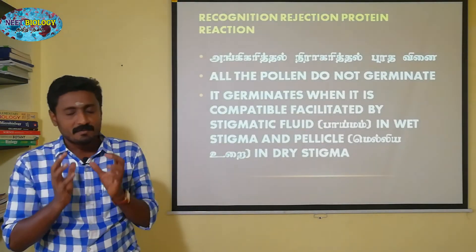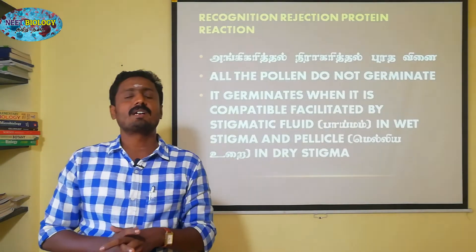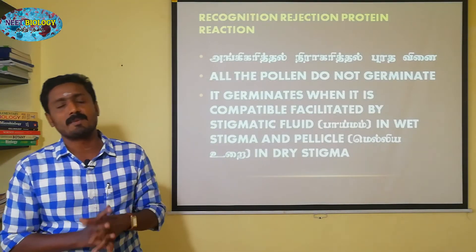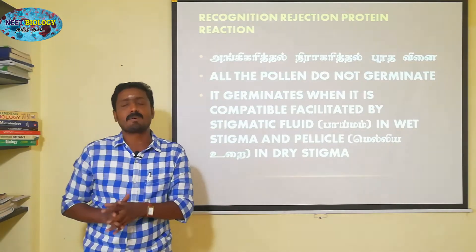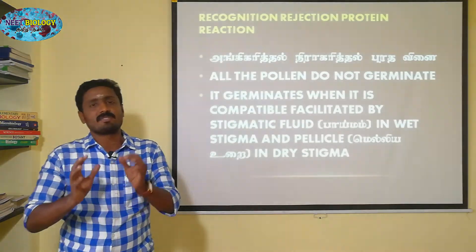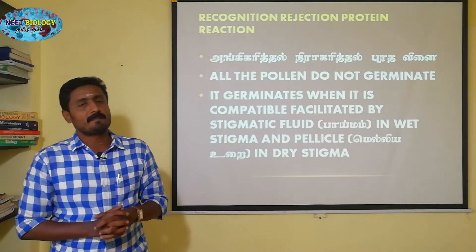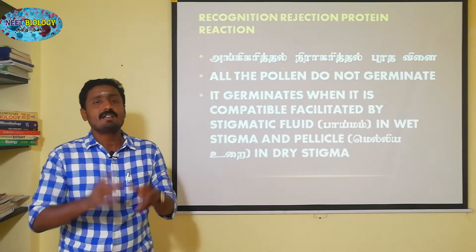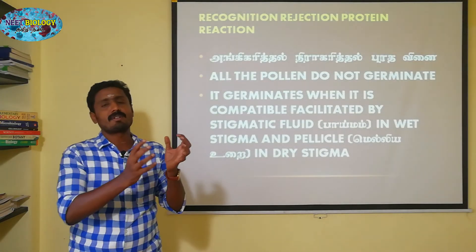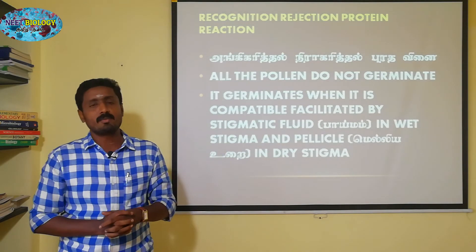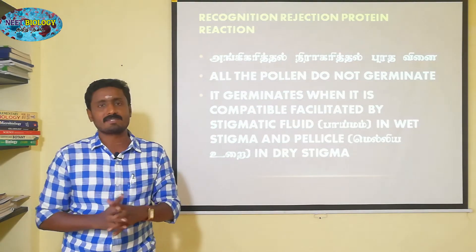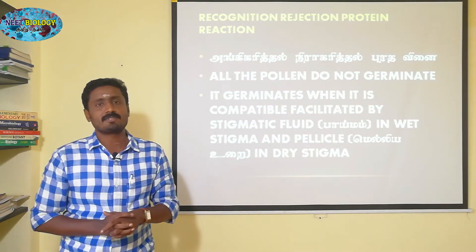If it is a wet stigma, it will produce the stigmatic fluid. If it is a dry stigma, it will produce the pellicle. Then, the pollen grains produce the pollen tube, and the next processes will proceed.